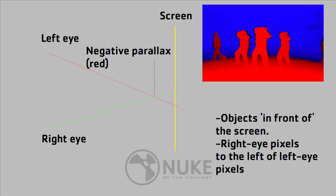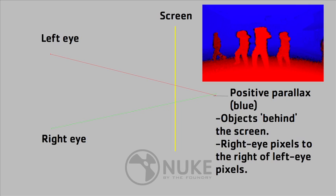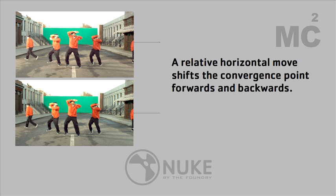Objects arranged in this fashion on the image tend to appear in front of the screen plane. Then positive parallax — the blue layer — represents objects behind the screen. The convergence point, i.e. what is perceived as being on the screen plane, can be fixed in post by doing a horizontal move between the two images, basically changing where the images line up, which changes how depth is perceived.